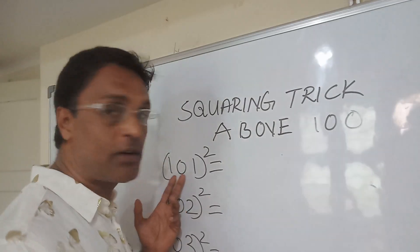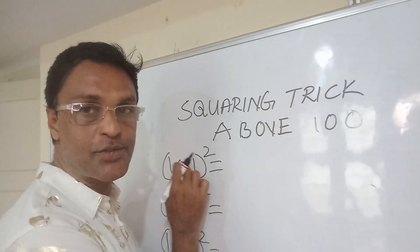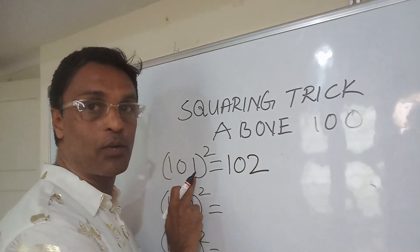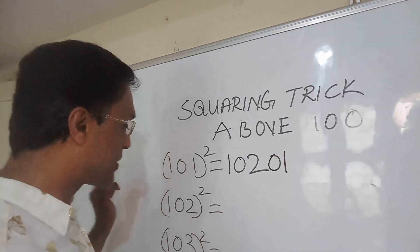So you want to find the square of 101. Just take the last number, 1, and add 1 to 101. You will get 102. Then take the last number, 1, and square it. 1 squared is 1, make it 01. This is the answer, 10201.